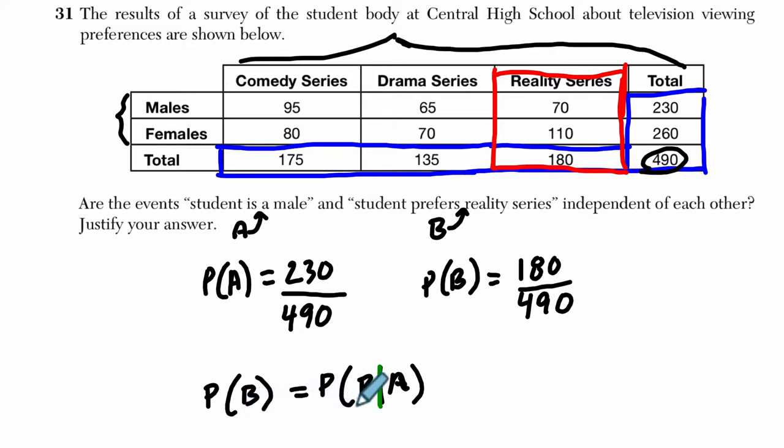So is this true? Is the probability of B equal to the probability of B, given that A has happened? Well, we can figure that out. In these two-way frequency tables or these contingency tables, what we can do is we can say, alright, what is the probability of B happening, given that A has happened? Well, what's the probability that a student prefers a reality series, given that you know they're a male? So we find the row for males. That's this row right here.